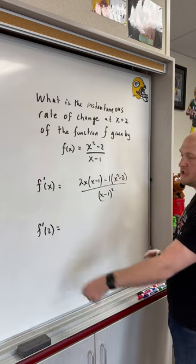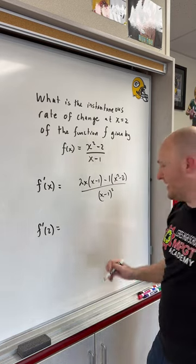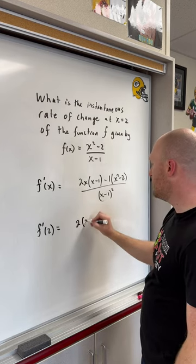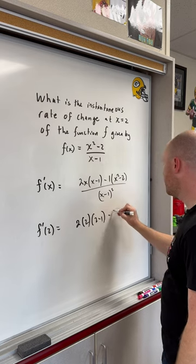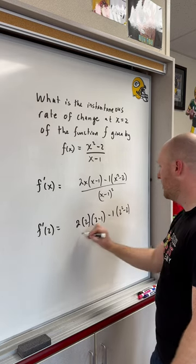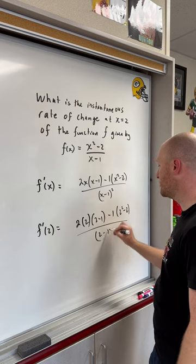Now, to find the instantaneous rate of change at 2, we'll evaluate at 2. Thus, f prime of 2 is 2 times 2 times 2 minus 1 minus 1 times 2 squared minus 2, all over 2 minus 1 squared.